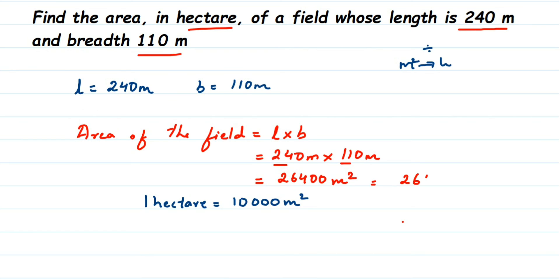So 26400 divided by 10,000 and the units will be hectares now. Because we have divided this with 10,000, the units will change. Now cancel the zeros. We have two zeros in the denominator. We don't have to cancel them, just convert directly into decimal.